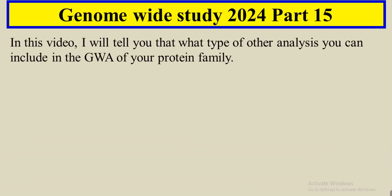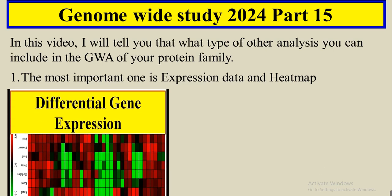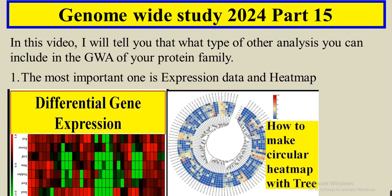In this video I will tell you what type of other analyses you can do and include in your genome-wide analysis study. The first one is the most important — that is the expression data of your gene and how you can present them in the form of a heatmap, and how you can get the differential expression genes from publicly available RNA-seq data. You can present it either in the circular heatmap or in the rectangular heatmap.